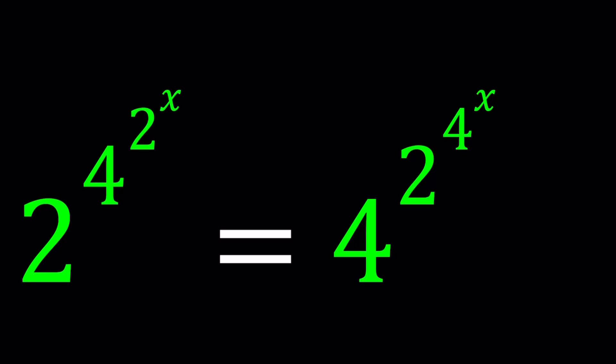Hello everyone. In this video, we're going to be solving a very exponential equation. We have a tower with 2's and 4's and X's. 2 to the power 4 to the power 2 to the power X equals 4 to the power 2 to the power 4 to the power X.